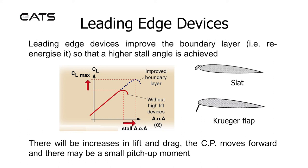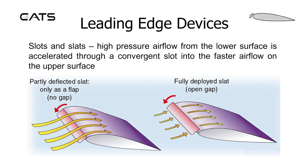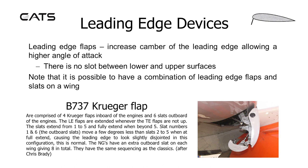Leading edge devices improve the boundary layer — re-energising it — so that a higher stall angle is achieved. There will be increases in lift and drag. The centre of pressure moves forward and there may be a small pitch-up moment. Slots and slats: high pressure airflow from the lower surface is accelerated through a convergent slot into the faster airflow on the upper surface. Leading edge flaps increase the camber of the leading edge allowing a higher angle of attack, with no slot between lower and upper surfaces. It is possible to have a combination of leading edge flaps and slats on a wing.